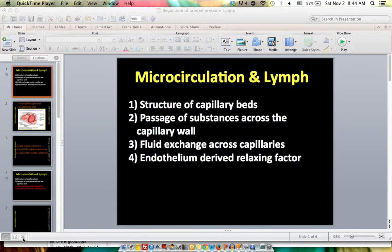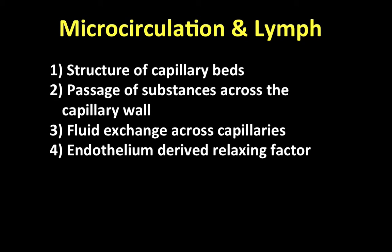There are four important factors we need to consider when talking about the microcirculation and lymph. Number one is the structure of the capillary bed. Number two is passage of substances across the capillary wall. Number three is fluid exchange across the capillaries. Number four is the endothelium-derived relaxing factor. In this video, we'll be talking about number one and two, and in another video, we'll cover number three and four.